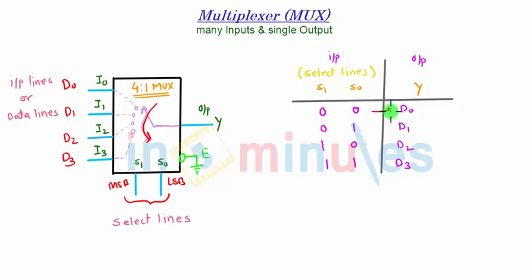Depending on these combinations S1, S0, 00 will select the I0 input and I0 corresponds to D0, therefore the output we get is D0. Similarly we get D1, D2 and D3.